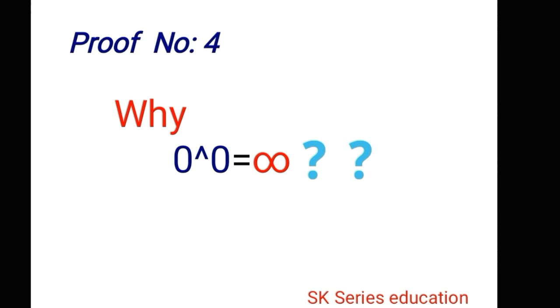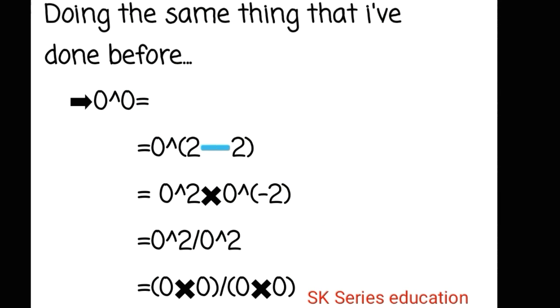Proof number four: why does 0^0 equal to infinite? Let's do the same. I am writing the power here as 2 minus 2, that means zero. By splitting, 0^2 into 0^(-2), this 0^(-2) comes to denominator: 0^2 over 0^2. Zero times zero is zero, over zero times zero is zero, over zero times zero is zero. That means zero over zero is infinite.